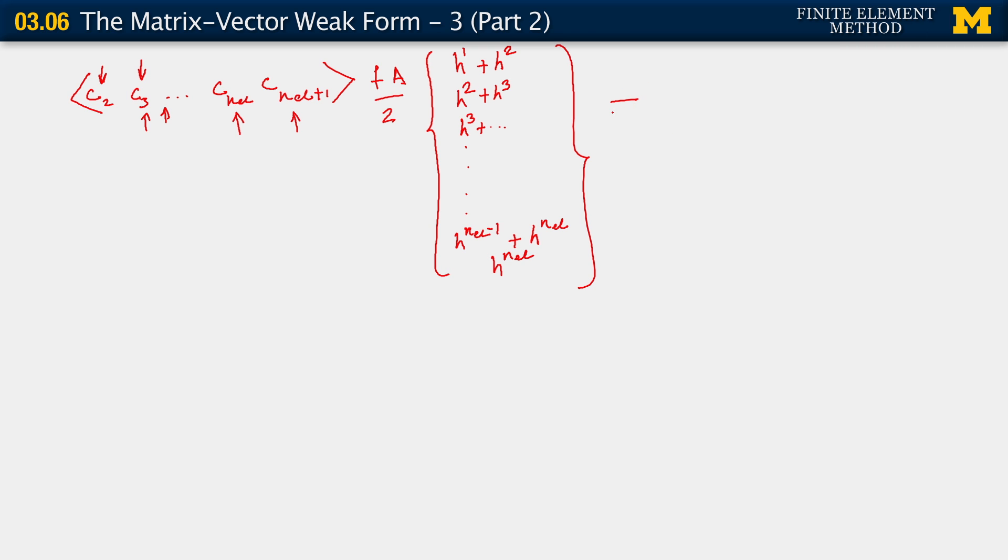This, once again, using this notion of the assembly operation of finite elements, is the assembly over E equals 1 to NEL of C1E, C2E, FAHE over 2, FAHE over 2, FAHE over 2. This is the contribution that we've assembled. And again, that's just an abstract way of writing this operation. The detail of doing that operation involves the sorts of mappings that we've just used here to write out these global vectors from the local ones and the sum over the elements.